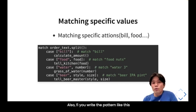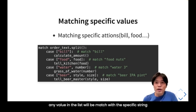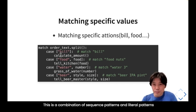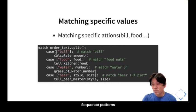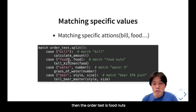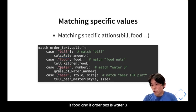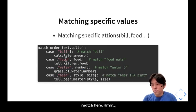You can also combine sequence patterns with literal patterns to match specific strings in the list — for example matching 'beer', 'food', or 'water' as the first element. If order_text is ['food', 'nuts'], the first element 'food' matches the literal, and 'nuts' is captured. If ['water', '3'], it matches the water pattern. This is a combination of sequence and literal patterns.